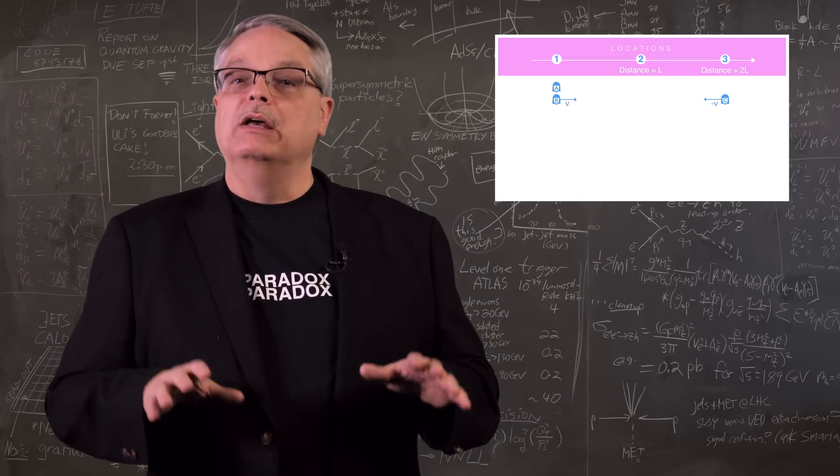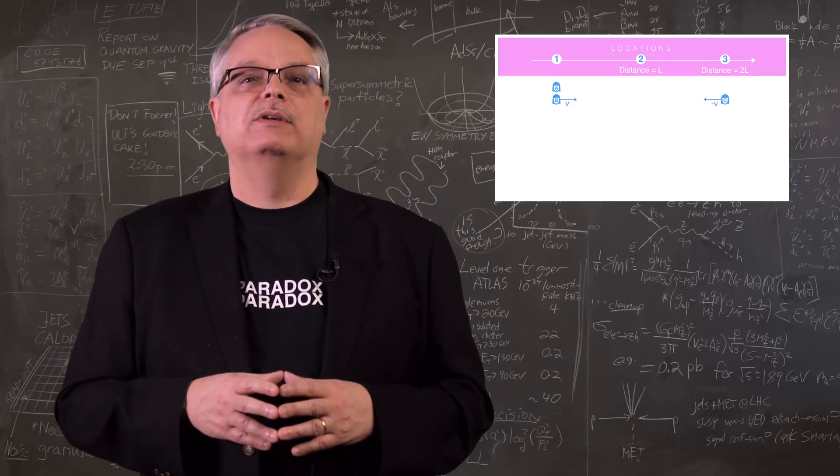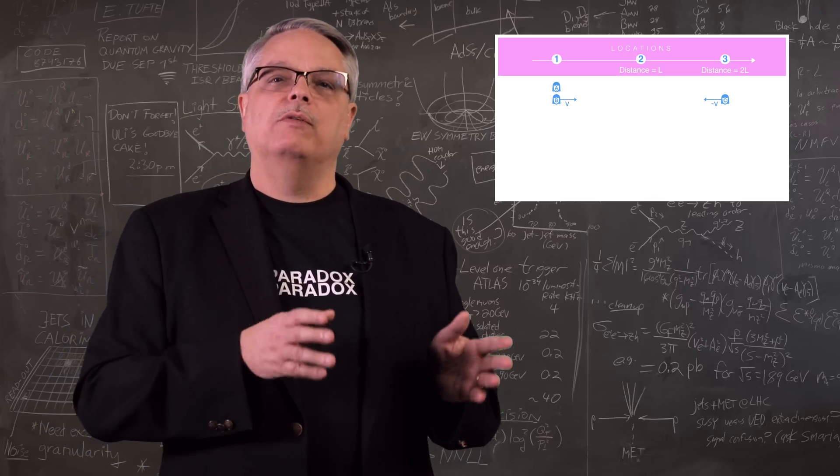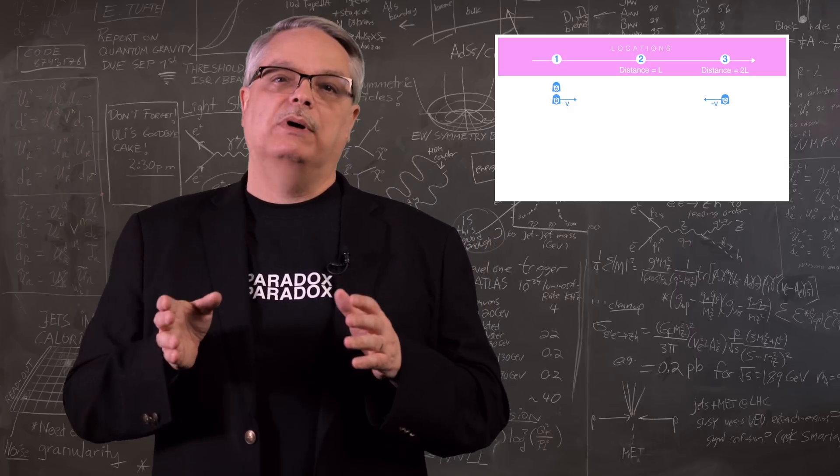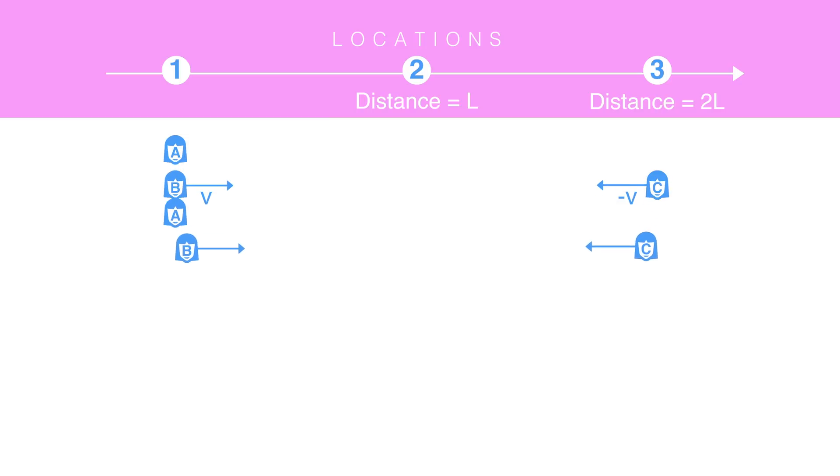So what's going to happen? Observer B will head to the right and observer C will head to the left. They will cross paths at location two. Observer B will keep heading off to the right and observer C will pass by observer A. All pretty straightforward, right?